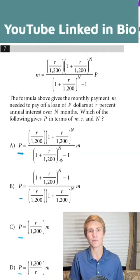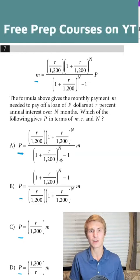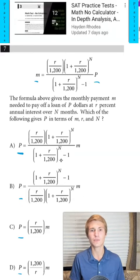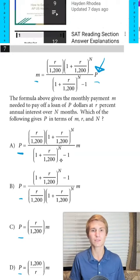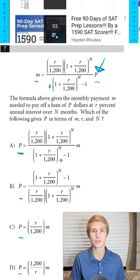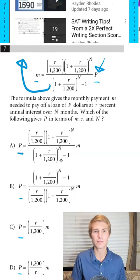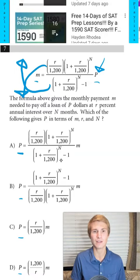The second trick is if you see you have one variable set equal to a fraction times the other variable, if you have to solve for the other variable, which in this case is P, all you got to do is flip the fraction and move it to the other side. So this denominator becomes the numerator by M, and the numerator becomes the denominator by M.